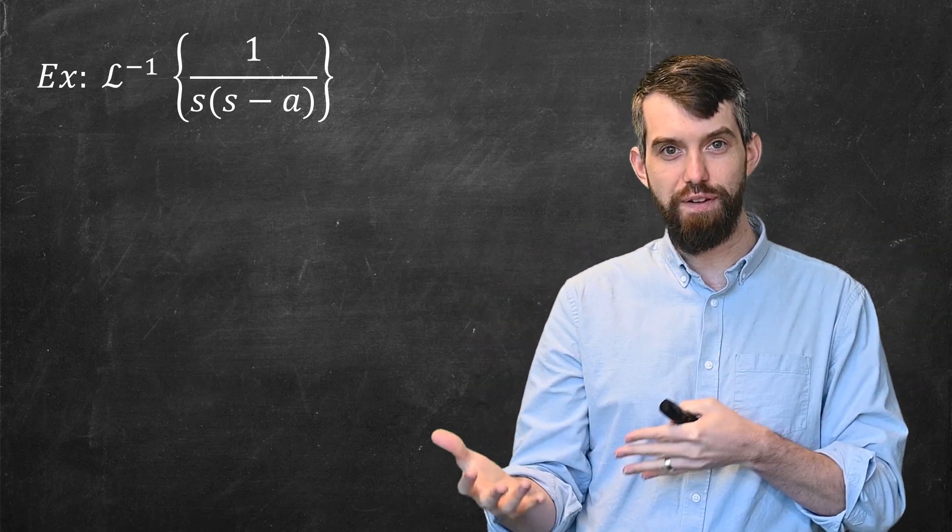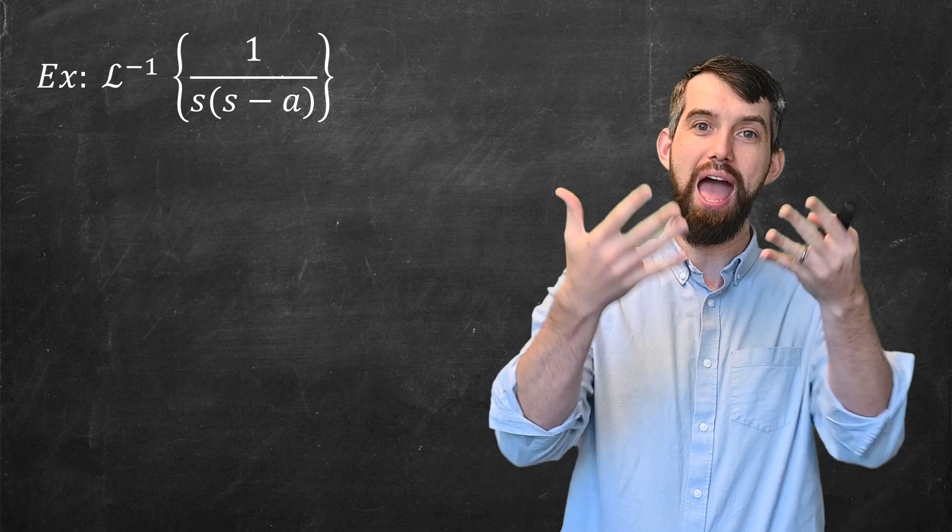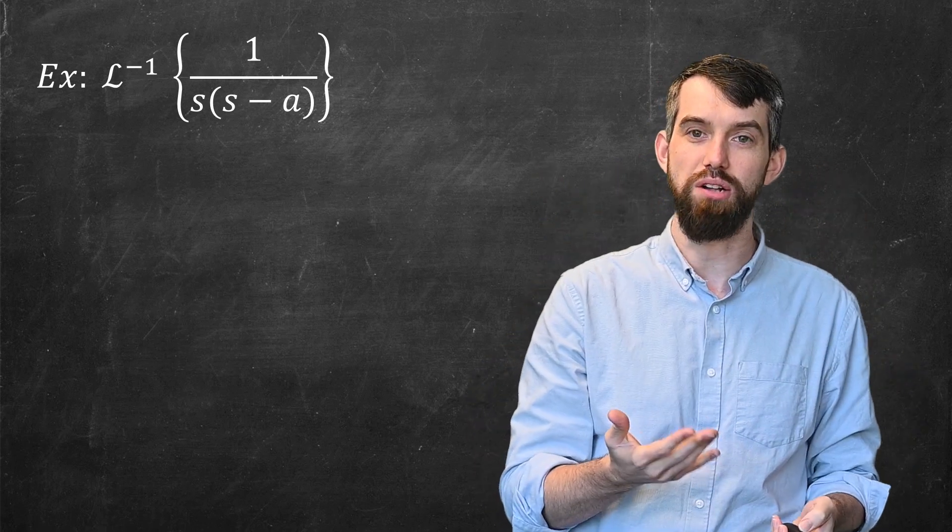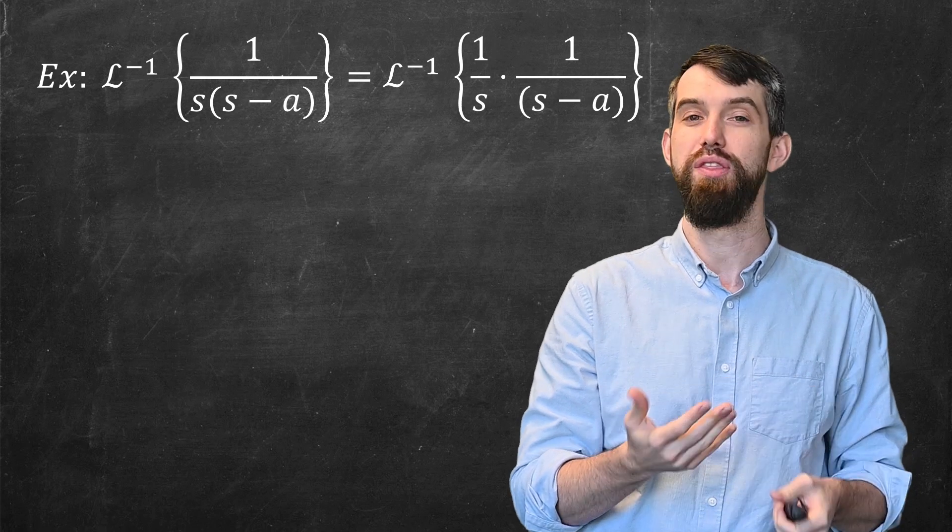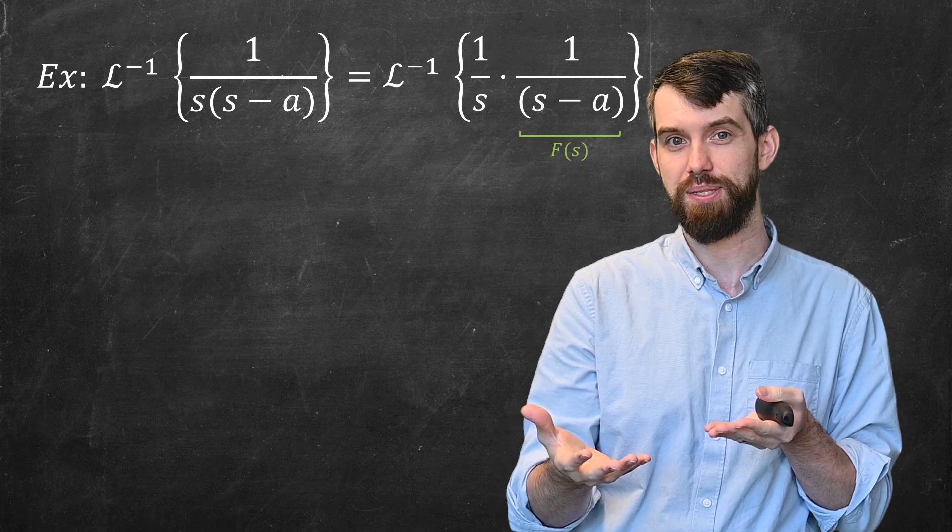Trying to identify it with the structure of F(s) divided by s, I'll just sort of rewrite this as a 1 over s pulled out to the side, and then the 1 over (s-a), which is going to be our F(s).